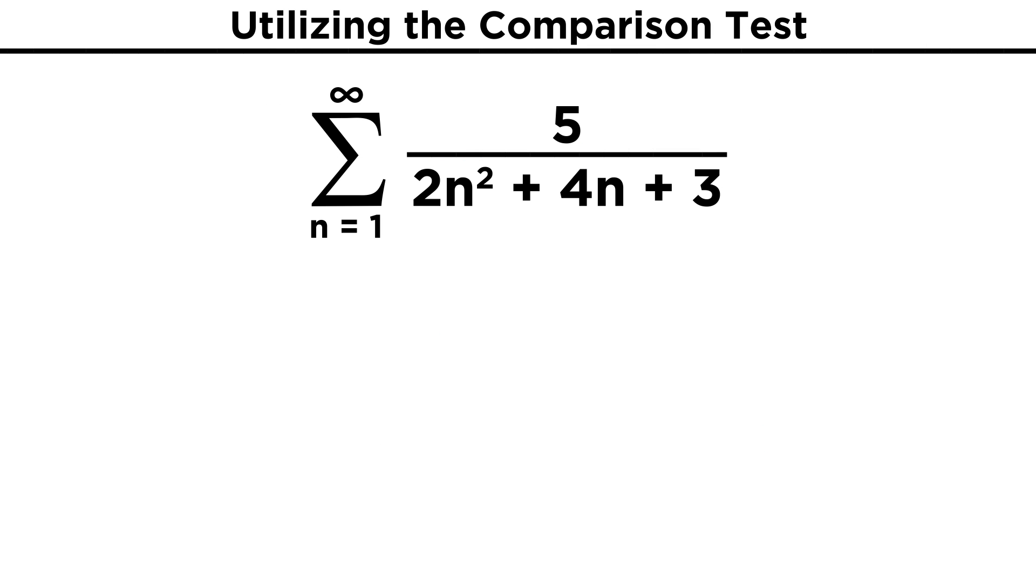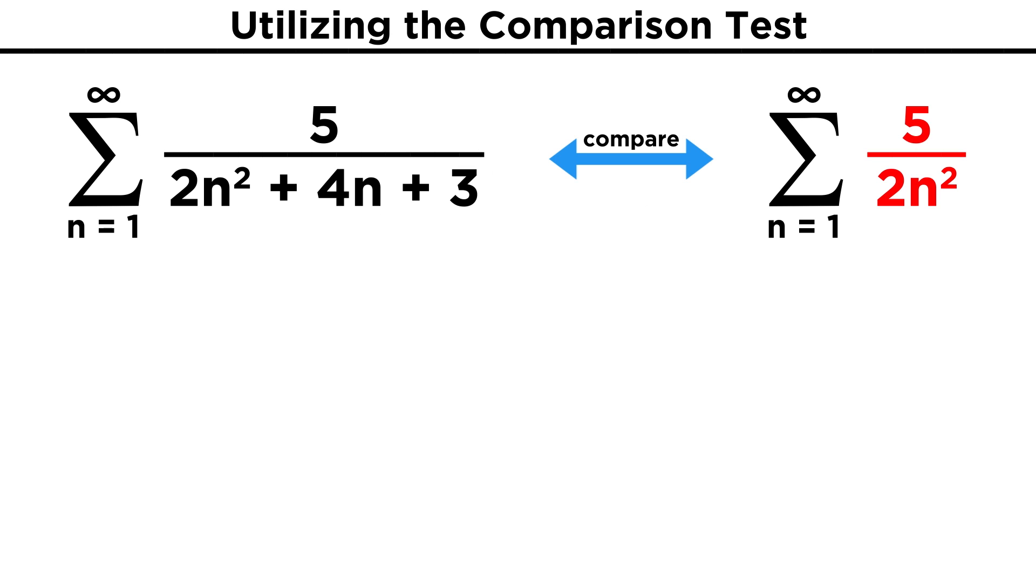Let's just do one example to make sure we can apply this. Take the series five over the quantity two n squared plus four n plus three. We can simplify this to five over two n squared to use the comparison test. What do we know about this simpler series?